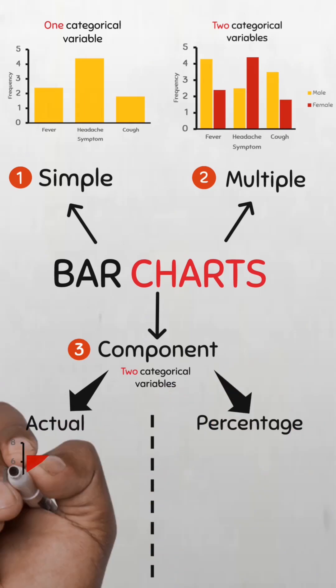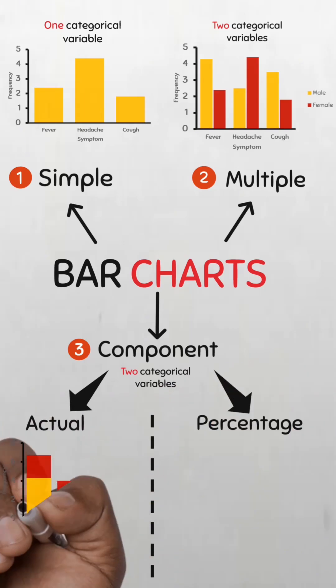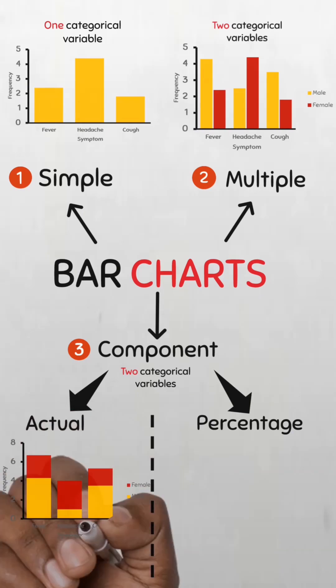In the actual component bar chart, the actual frequency or the value of the main category represents the overall height of each bar.